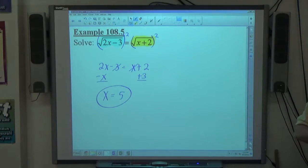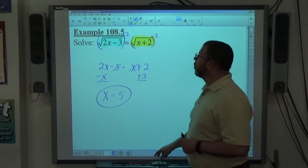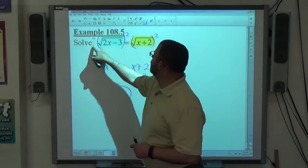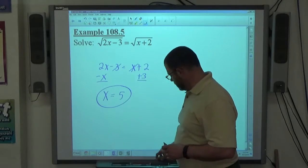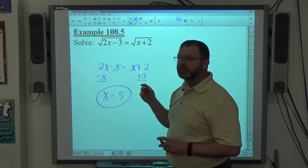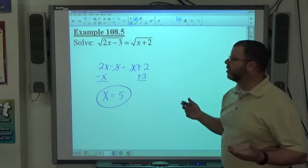x equals 5 is the solution, only if it works. Now with the radical situation here, the one extra added feature for this is you can't take the square root of a negative number. So if this x creates negative numbers, we have to throw it out. But otherwise, if it works, it works.